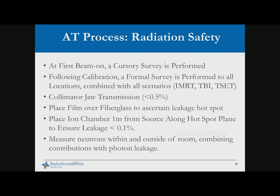The radiation test begins with a customary survey at first beam-on to ensure all shielding goals are met. Following that, you do a formal full survey to confirm primary and secondary barriers are properly constructed. Leakage from the LINAC must be 0.1% of the isocentric dose. For LINACs with energies greater than 10 MV, you need to measure the neutron contribution from photoneutron interactions.